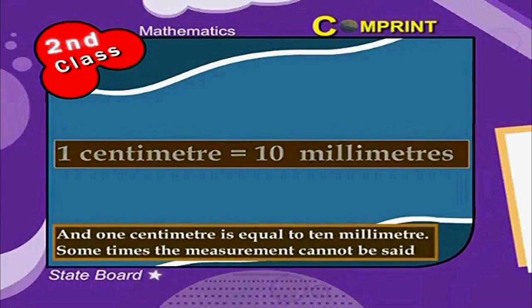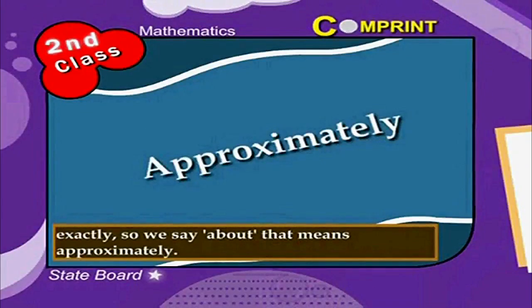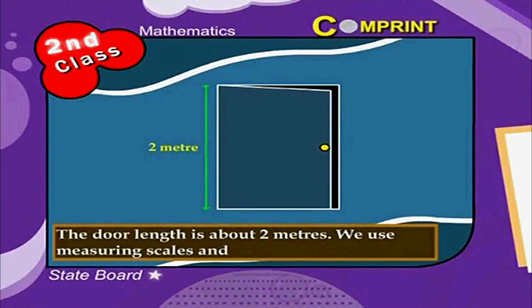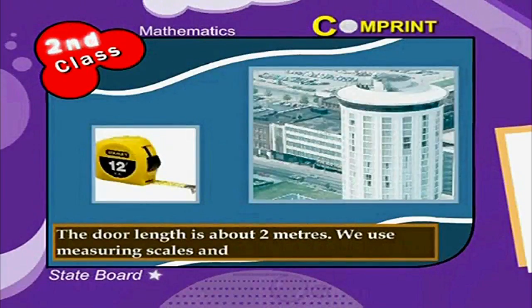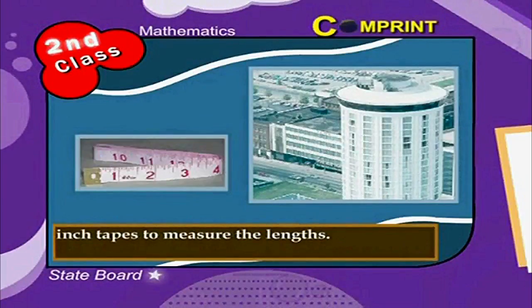Sometimes the measurement cannot be said exactly, so we say 'about,' that means approximately. For example, the door length is about 2 meters. We use measuring scales and inch tapes to measure the length.